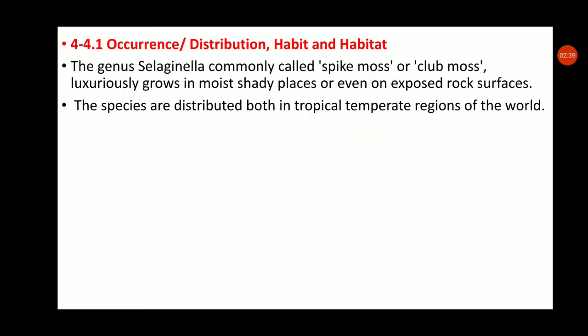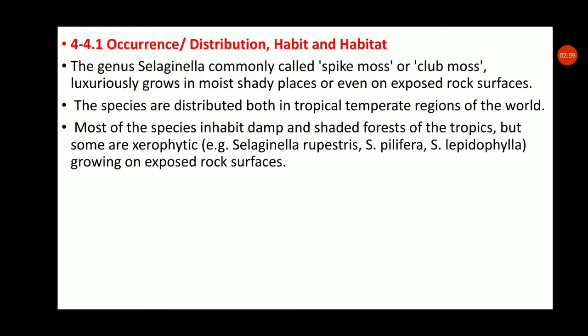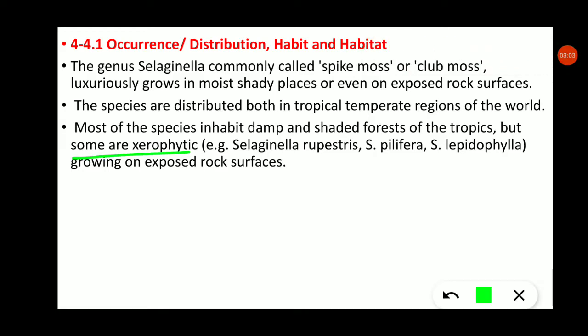Most species inhabit damp and shady forests of the tropics, where dense vegetation provides shade. However, some species are xerophytic — growing in water-stressed conditions. Examples of xerophytic Selaginella species include Selaginella lepidophylla and Selaginella pilifera, which also grow on exposed rock surfaces.